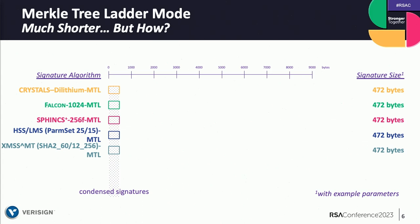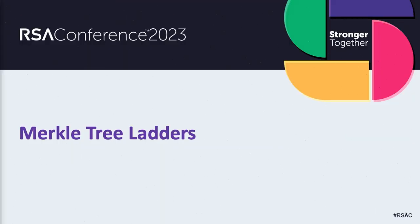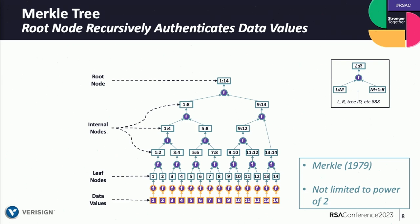By using these algorithms in combination with Merkle tree techniques, we can get, for certain parameters, sizes around 472 bytes consistently for what we call condensed signatures, plus some overhead. Without changing the algorithms — just using them in a new way, which is why we call it a mode of operation — we can use the good work already done for these algorithms more efficiently. The main concept is something we call Merkle tree ladders. There have been so many good uses of Merkle trees over the years, and Merkle tree ladders give you additional flexibility in applying them.